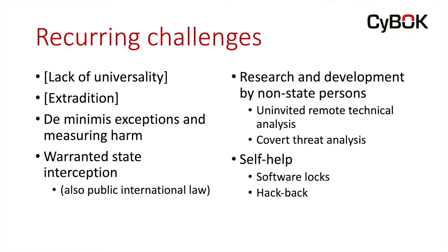There are a number of recurring challenges that come up with these types of crimes. First, lack of universality — not every state in the world agrees that these things should be criminal. Secondly, extradition — it's very well known that there have been cases where it's difficult to gain extradition of somebody because they have committed a crime against an information system. Third, how do you measure harm with respect to these types of crimes? In some systems, the crime is conceptualized as an economic crime and the punishment is directly related to how much financial damage you can demonstrate was done by the criminal. And since we have difficulty measuring harm, that leads to problems about whether we should have de minimis exceptions and other types of exceptions to these laws.